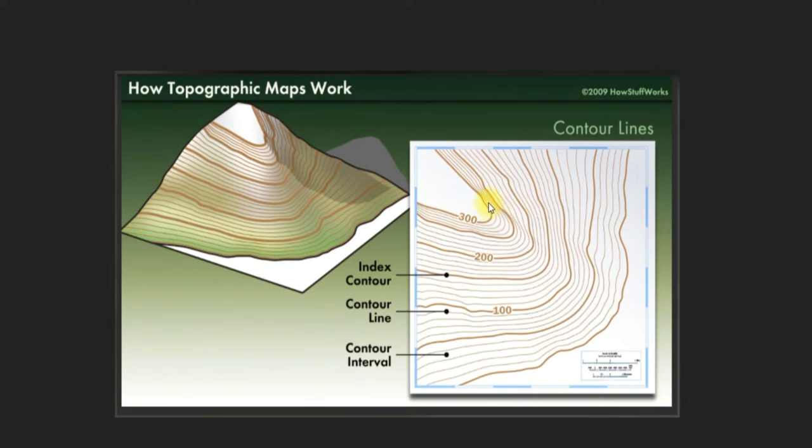If you're looking at a place where the lines are closer together, you can tell that is a steeper incline than down in an area where the lines are further apart. Once you know what the lines indicate, your mind begins to create a 3D picture just by reading them. You're reading the lines and your mind is putting the three-dimensional picture together.